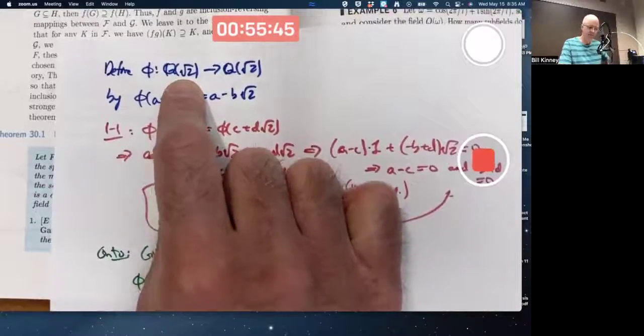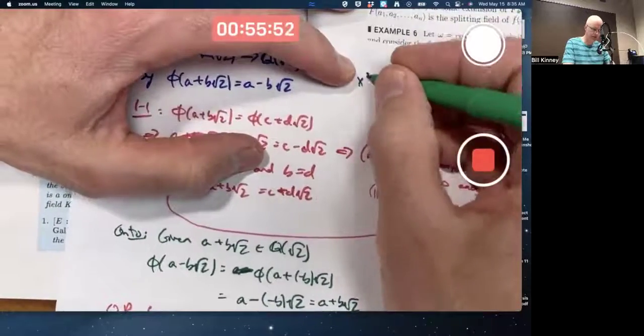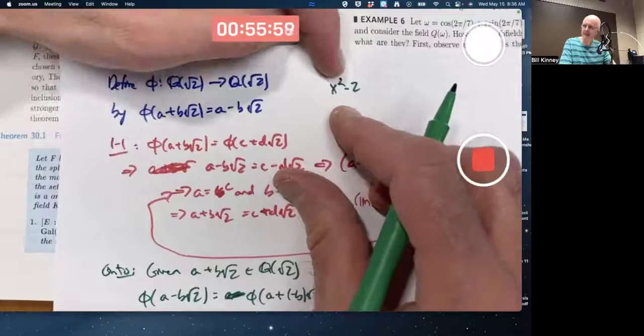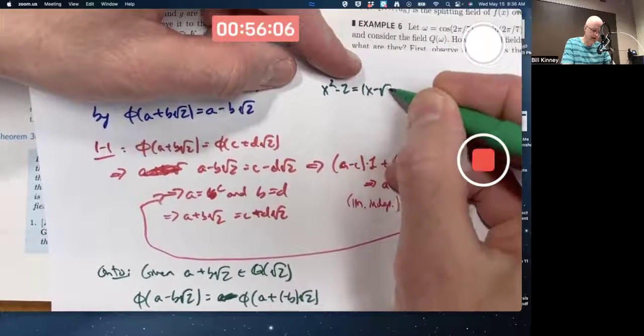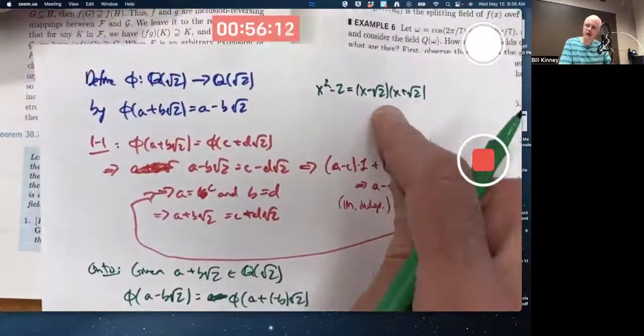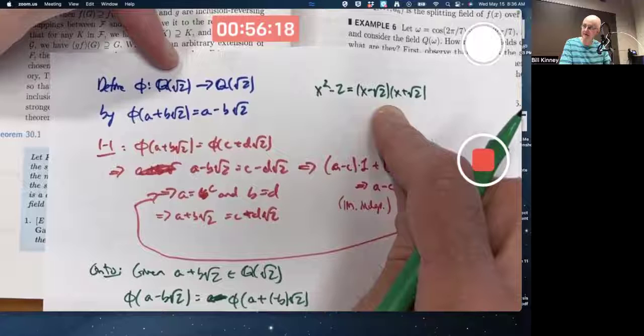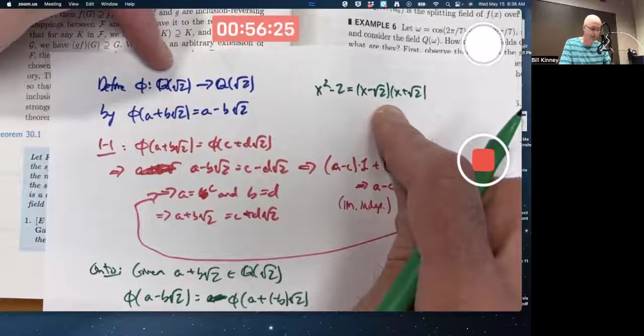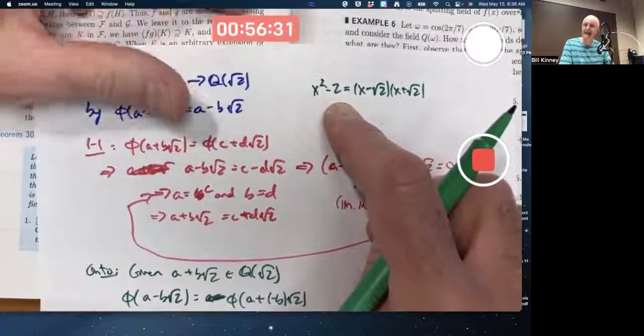Q adjoined root 2 is a splitting field for x squared minus 2 over Q. Why? Because this completely splits in that field. What did that mean? It means it completely factors. This is x minus root 2 times x plus root 2. Product of polynomials with coefficients from this field. It's the minimal field extension of Q in which that happens. That's why it's a splitting field for Q adjoined, for this polynomial over Q. Therefore, the fundamental theorem of Galois theory applies.